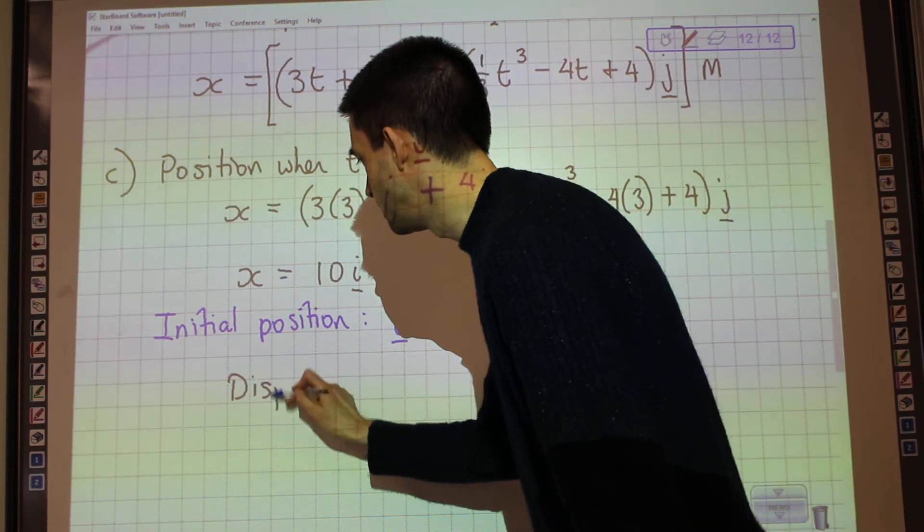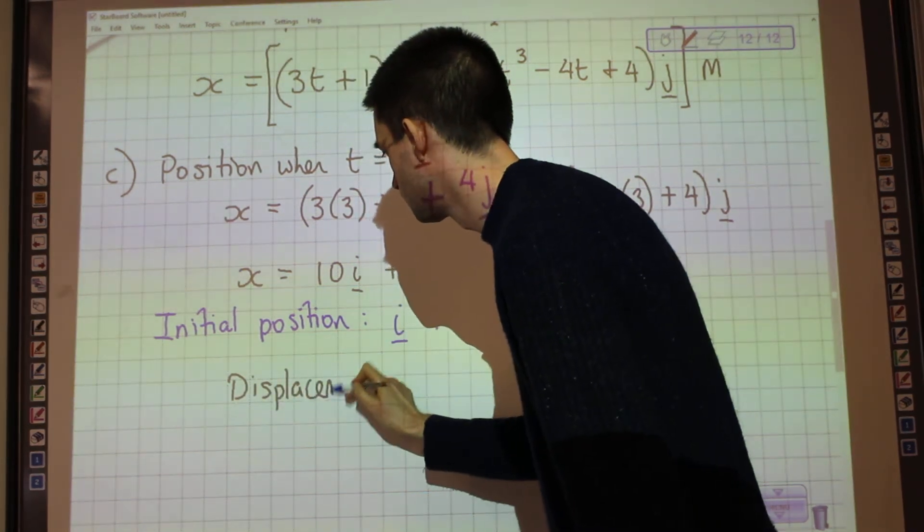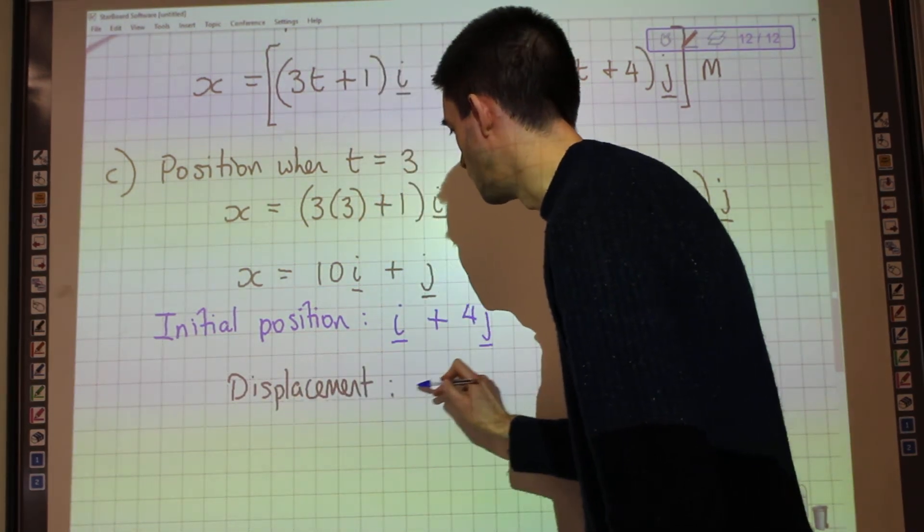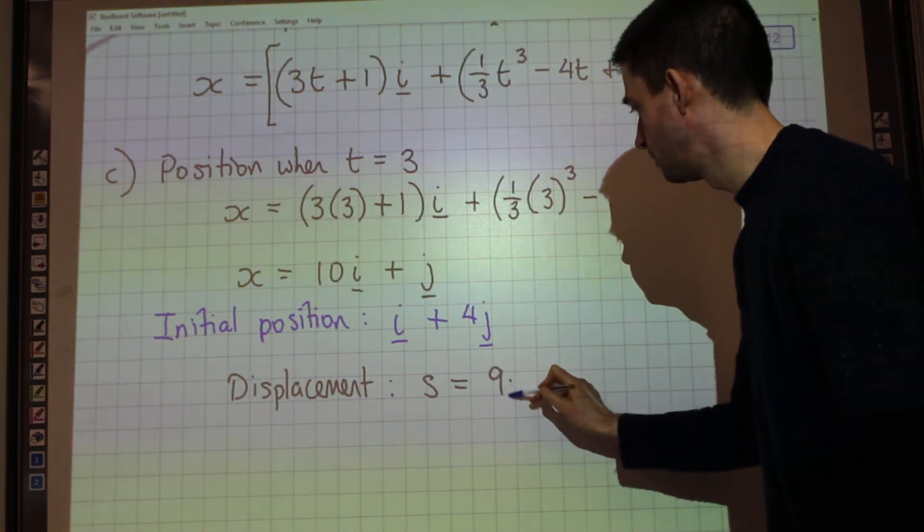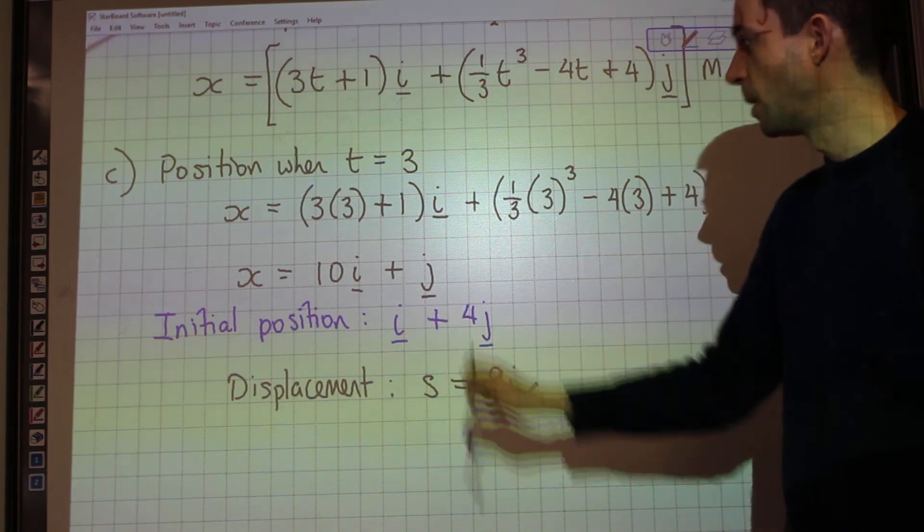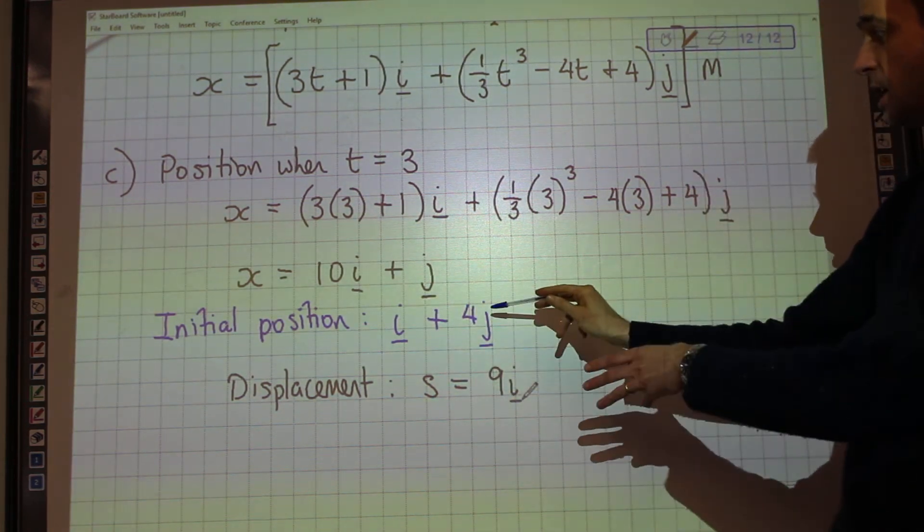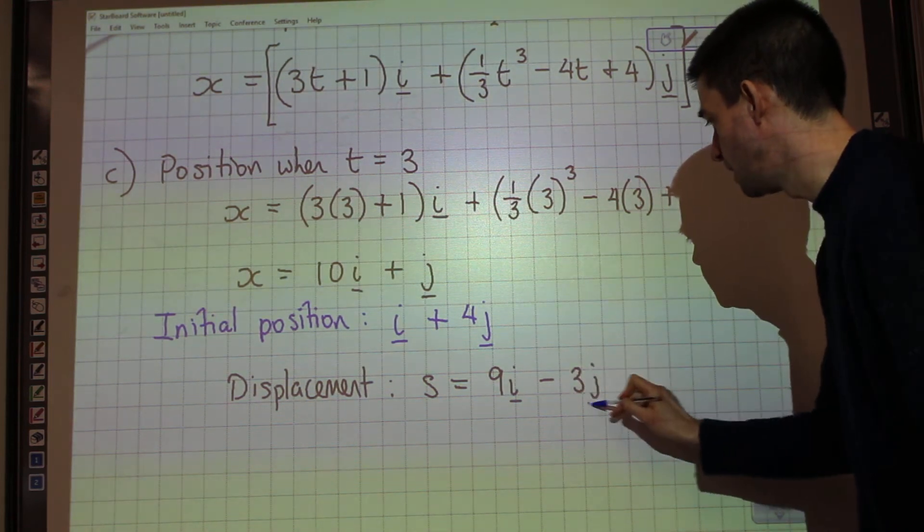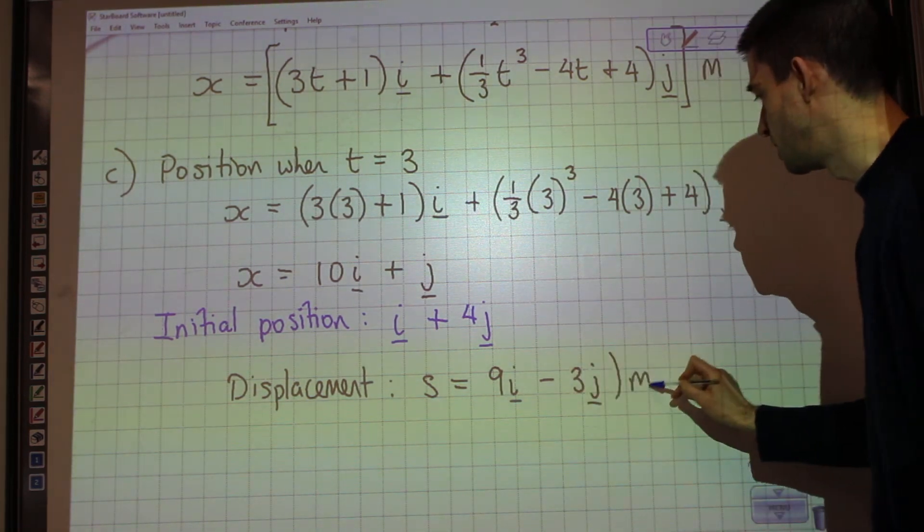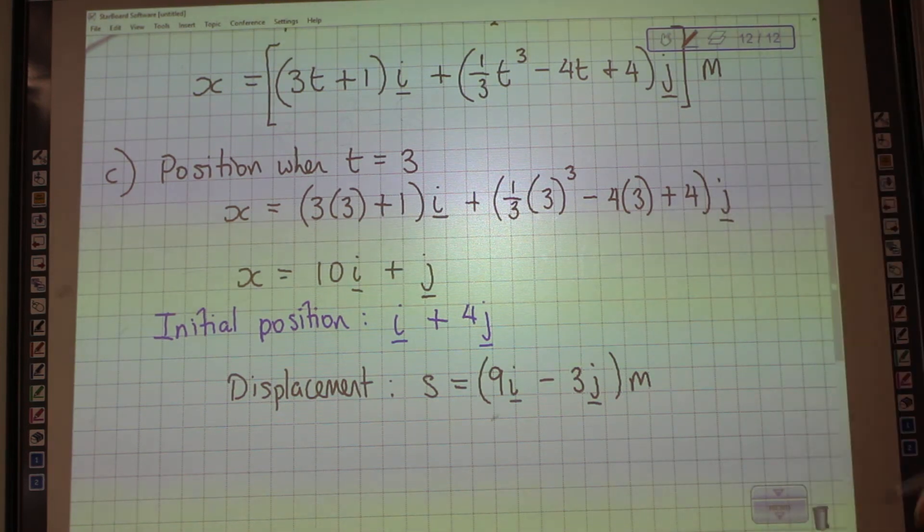And we want to know how far we've moved in relation to that initial position. So, if we started at i and we're now at 10i, then the displacement, which we'll call s, must be 9 in the i direction. Doing 10 minus 1. Similarly, if we started at 4j and we're now at j, we must have minus 3j as our displacement. And that is in metres.